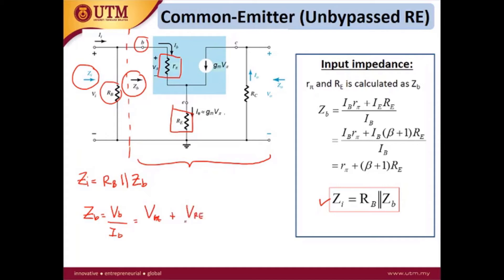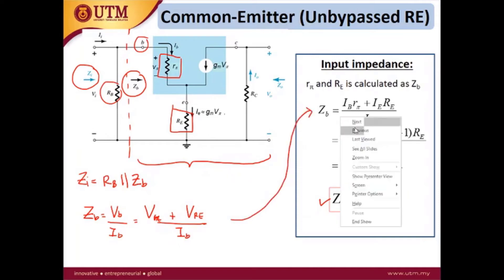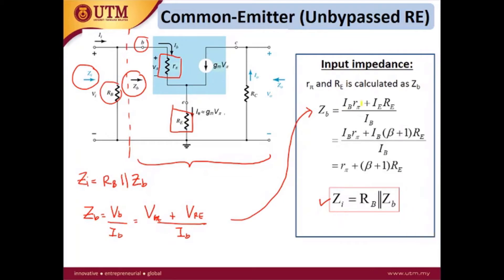So the calculation is: Vπ equals iB·rπ, and the voltage at RE is iE·RE. The current iE can be related to iB using iE = (β+1)·iB. So iE is replaced by (β+1)·iB, and all of ZB is expressed as a function of base current, so iB can be cancelled out.